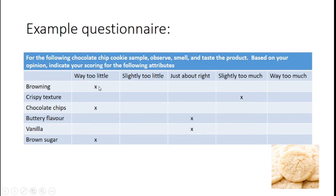From those results: I need to dial up the browning — cook longer or add an ingredient like brown sugar with molasses content. We also need more chocolate chips — there don't appear to be any. Butter and vanilla are hitting appropriately. For crispy texture, we may need to adjust cooking temperature, modify plasticizers, or change moisture content to create a more cake-like texture.